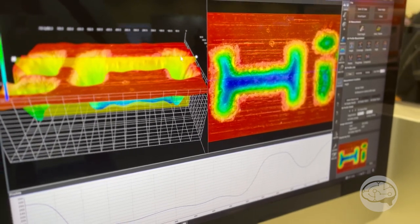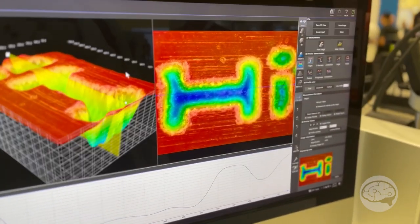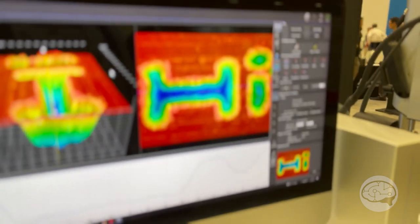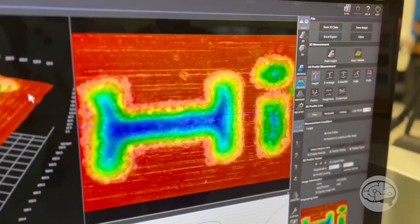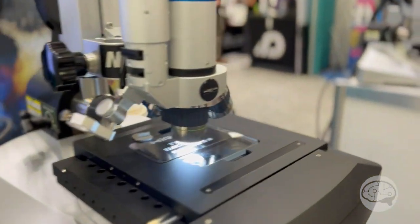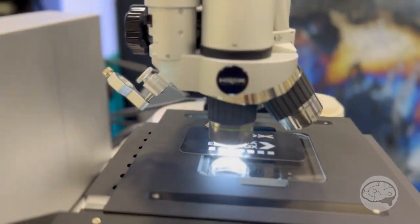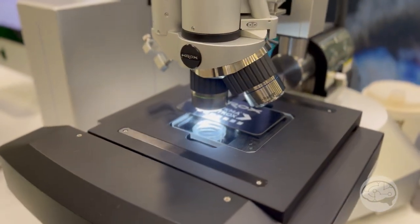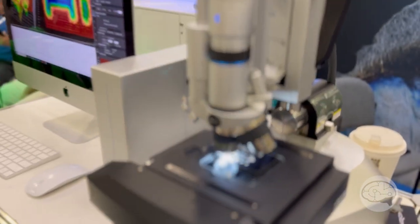It pairs seamlessly with our optical microscope and gives you nano level profilometry. What we can do is on the optical side of the microscope we find the area we're looking to measure, then we'll delta shift over to the chromatic confocal sensor, and from that we're able to get our nano level measurements.